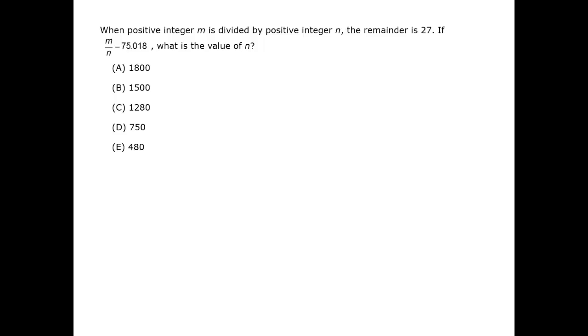In this question, we are given two statements that convey similar information. Both the remainder and the non-integer portion of the decimal describe the portion of the division that didn't happen cleanly.